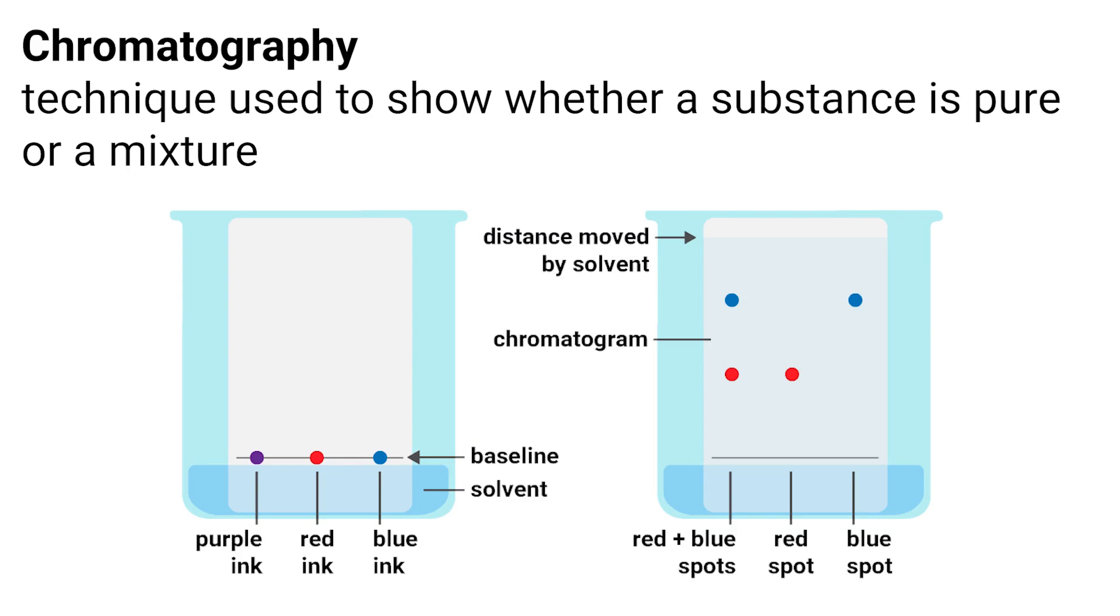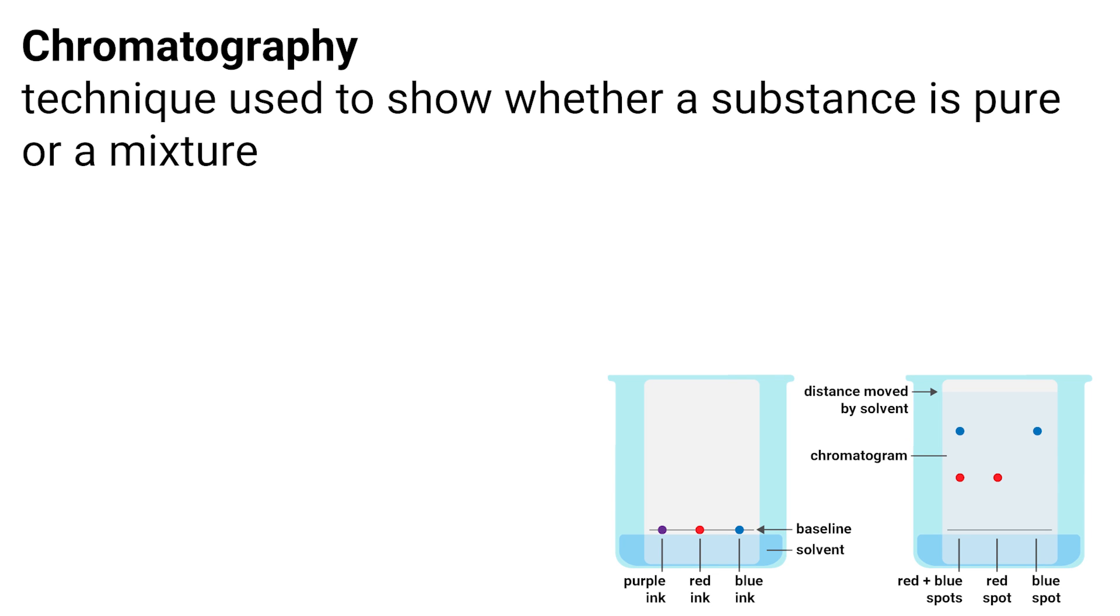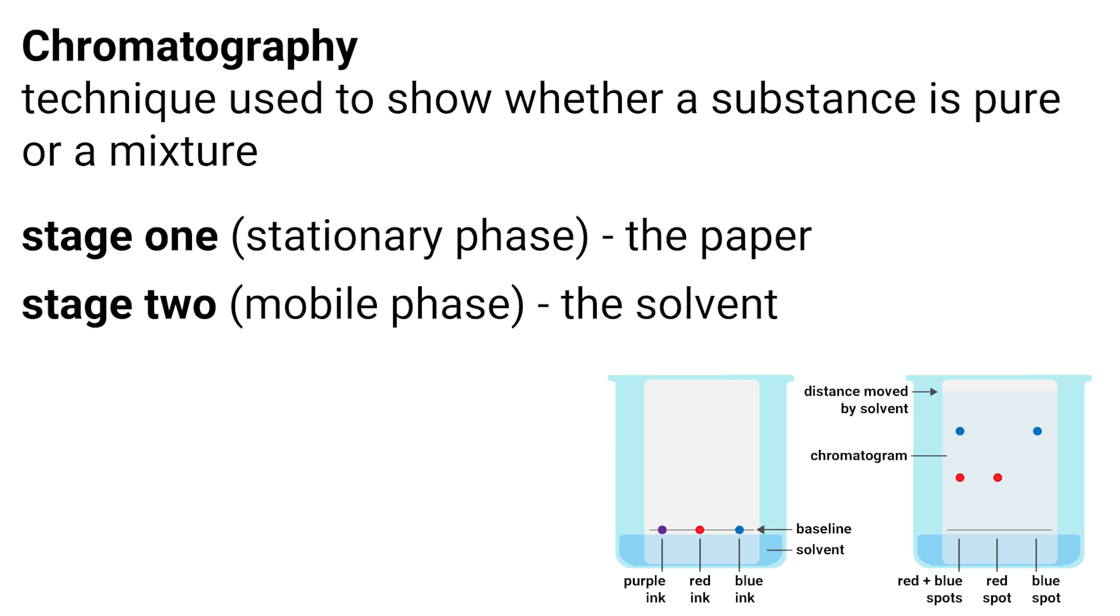On the screen are two diagrams. The first image shows you what the chromatography experiment looks like before it's run and the second one shows you what it looks like after it's been run. Paper chromatography consists of two phases. The first is the stationary phase and this is the phase that doesn't move, the paper. But the crucial part of this experiment is the mobile phase, the phase that does move, and it's the solvent as the solvent moves up through the paper.